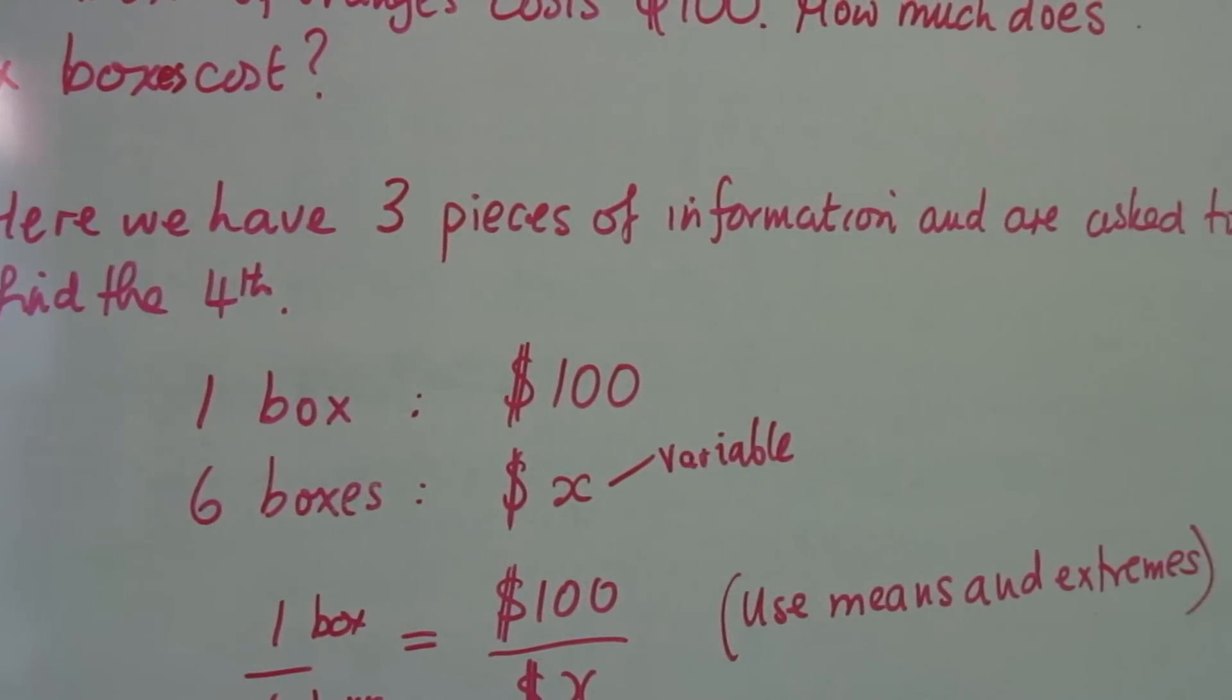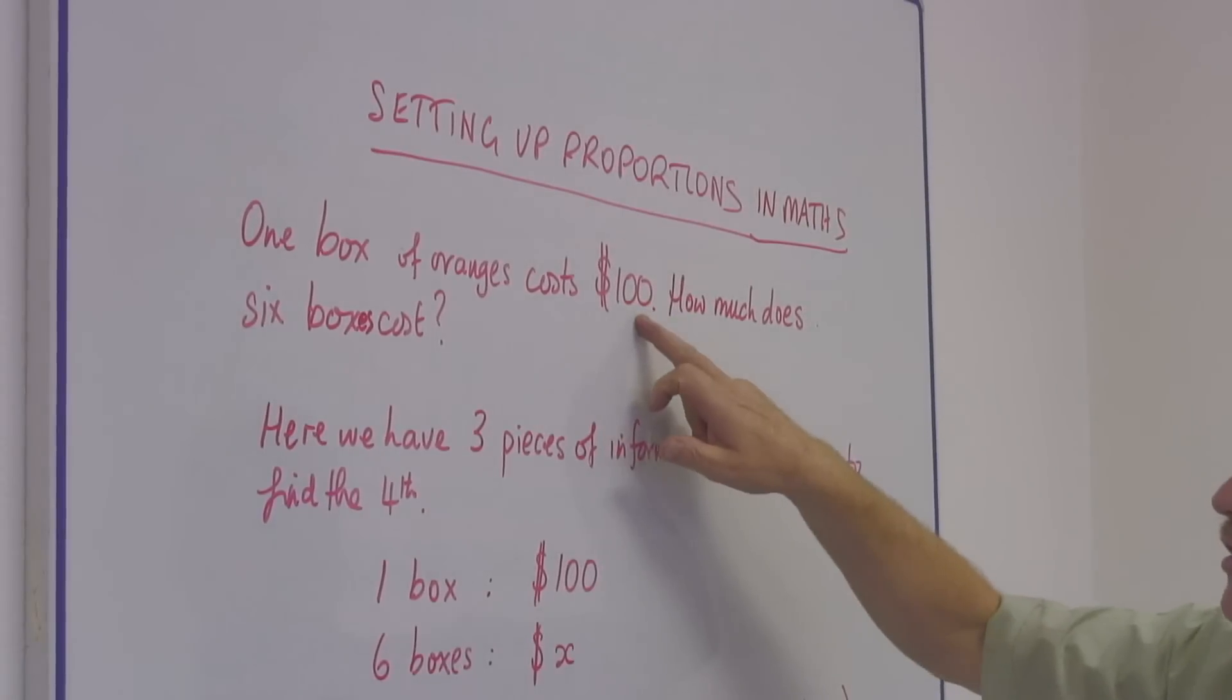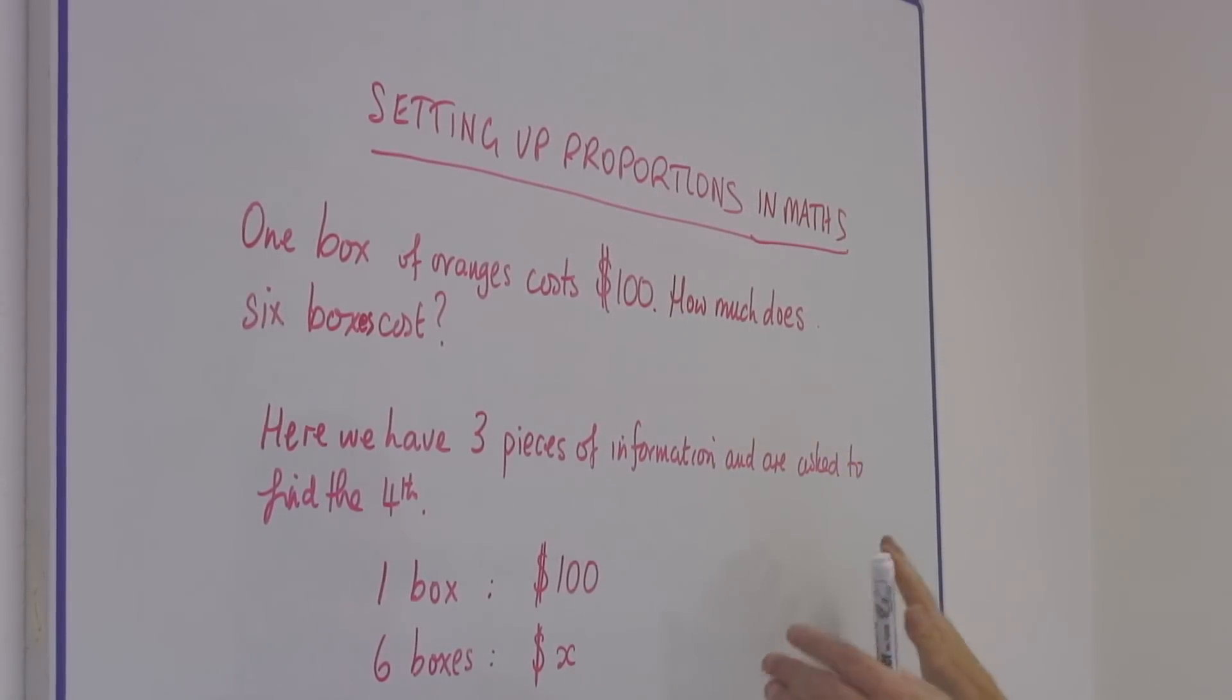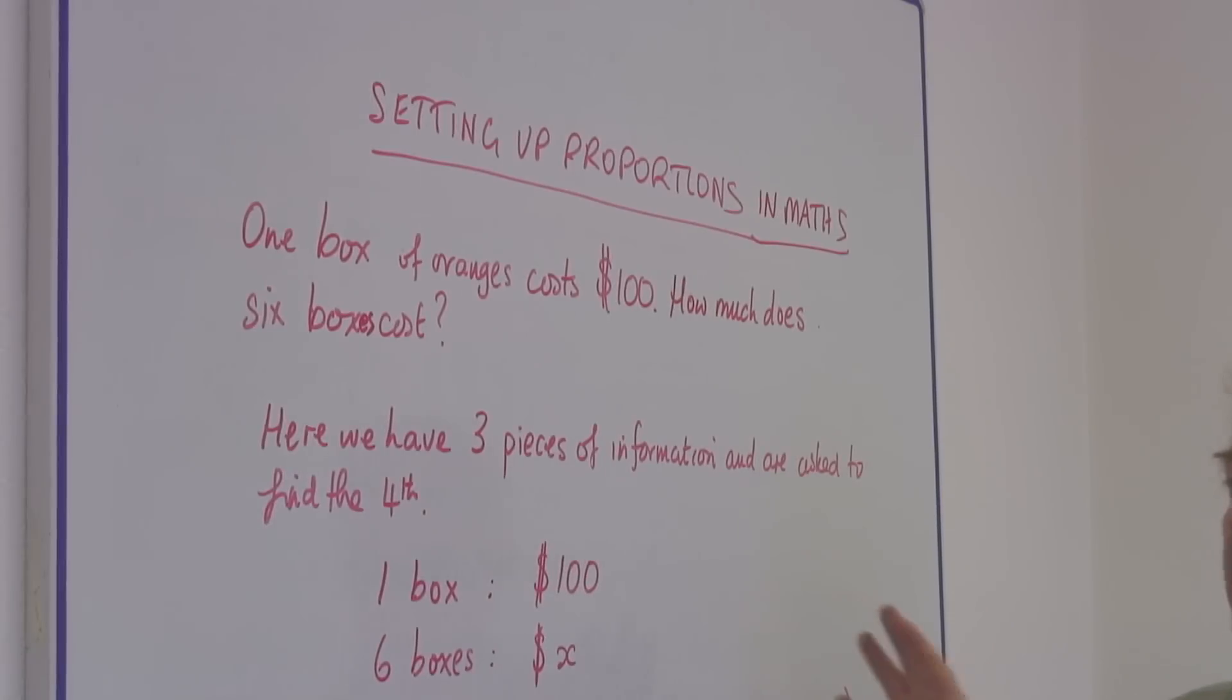Okay, here we have three pieces of information. One box, six boxes, $100. And we're looking for a fourth. How much suggests that there's a fourth piece of information which we have to find.